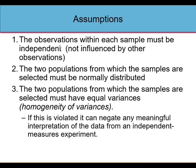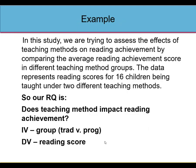For an independent samples t-test, several assumptions must be met. First, observations within each sample must be independent of each other. Second, the two populations must be normally distributed — tests are often robust to violations of normality, so this isn't a make-or-break assumption. Third, the two populations must have equal variances, also called homogeneity of variances or homoscedasticity. If this third assumption is violated, it can negate any meaningful interpretation of the data.